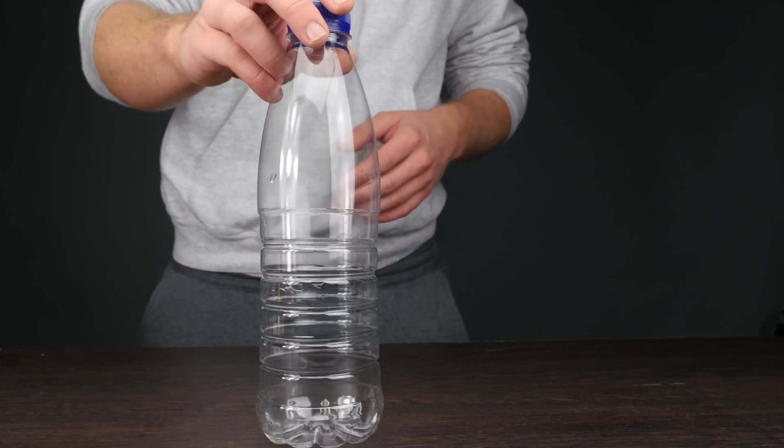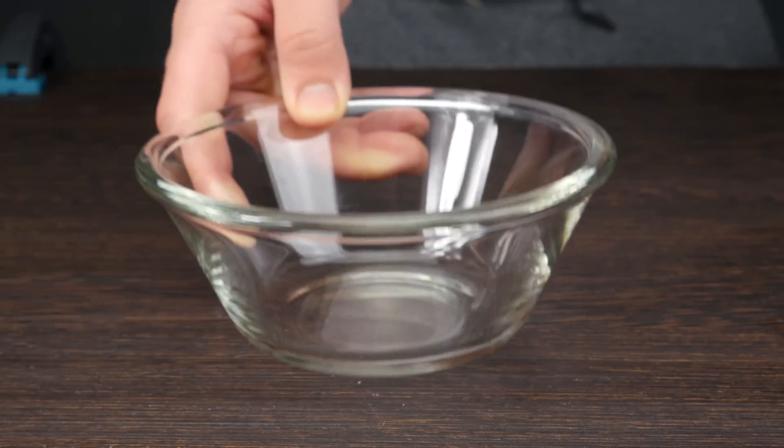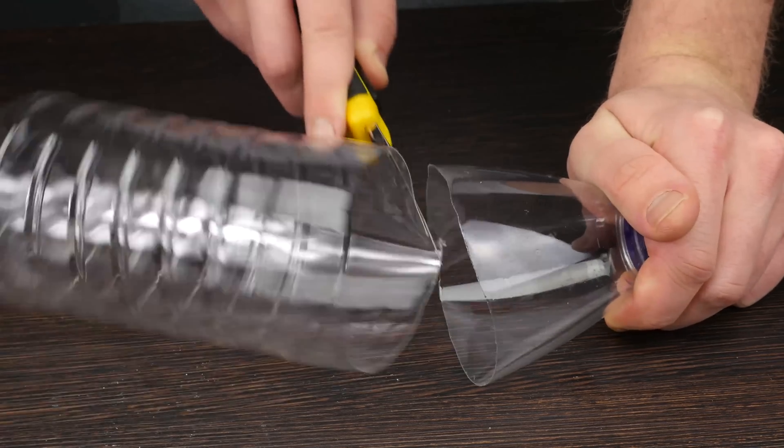And number 6. For this experiment, you'll need a plastic bottle, some bandage, a cutter knife, a big bowl, water, washing up liquid and a rubber band. First, cut the bottleneck off with a cutter knife.